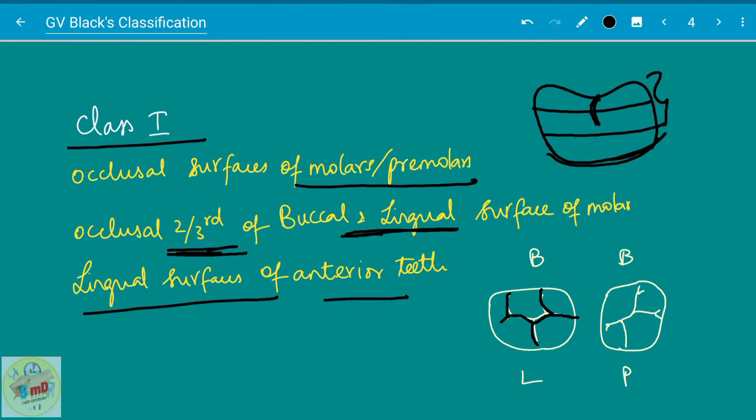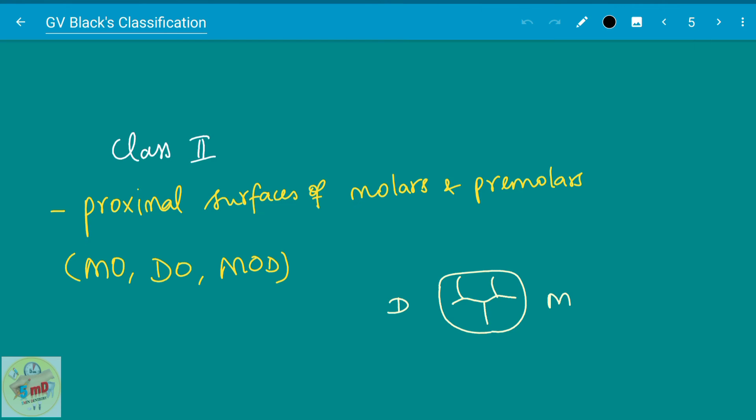Lingual surface of the anterior teeth, as I said, the pit and fissures are seen in the lingual aspect also, lingual aspect of the anterior teeth. So when the occlusal caries extends buccally we call it as buccal extension, and when it extends lingually we call it as class one with lingual extension.